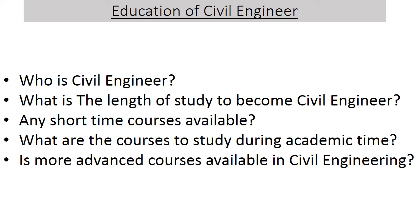After taking basic courses in most sub-disciplines of civil engineering, students move on to specialize in one or more sub-disciplines at advanced levels. Some academic institutions offer post-graduate degrees — called a master's degree — which allows students to further specialize in their particular area of interest. In most countries, a Bachelor of Civil Engineering will represent you as a civil engineer with fulfilled academic education, and you are ready to work as a civil engineer in the field.